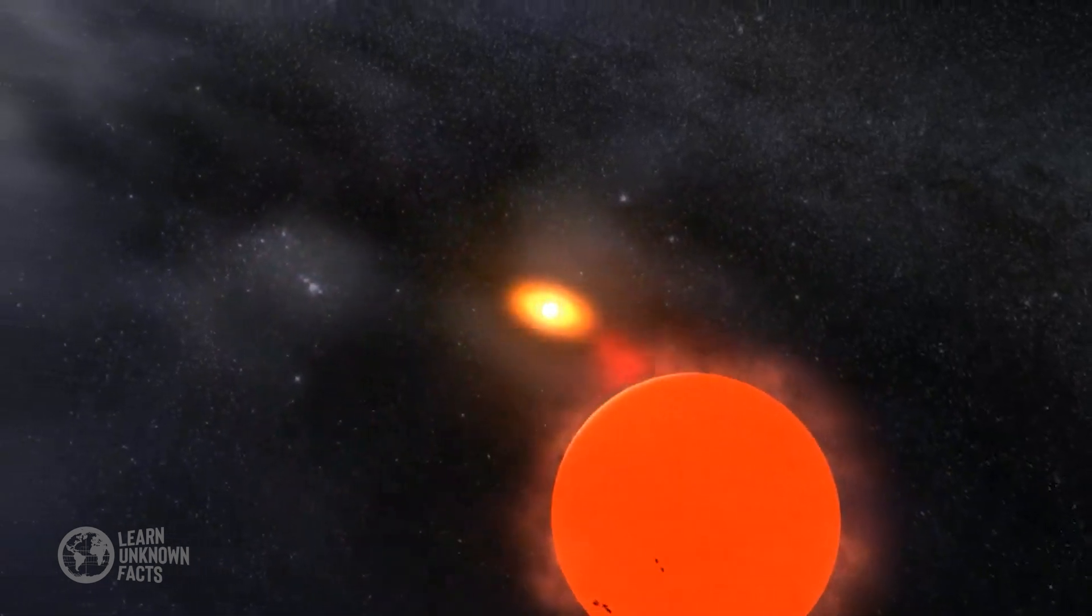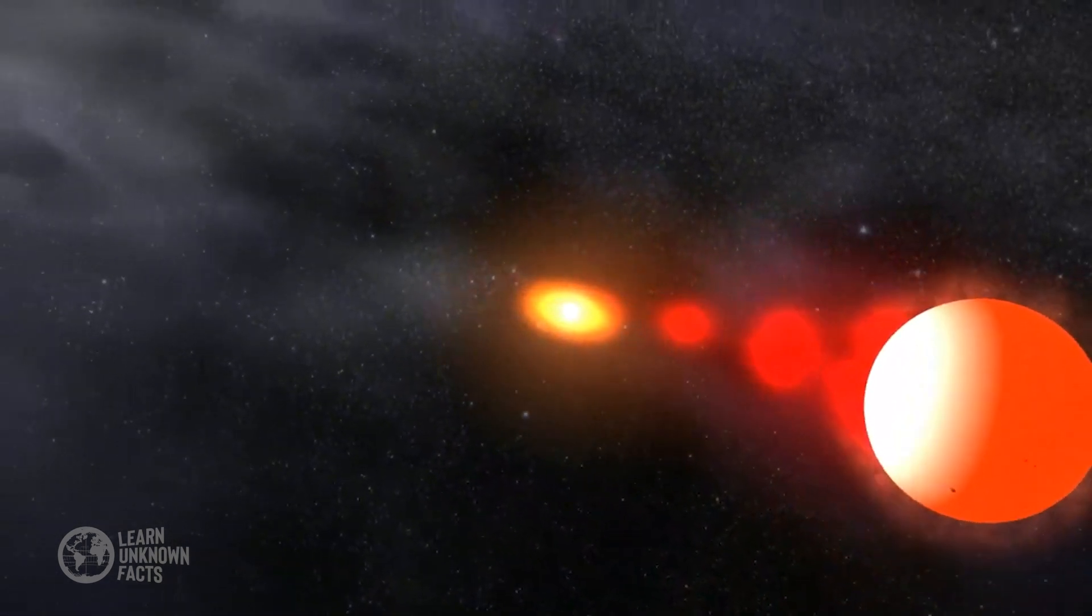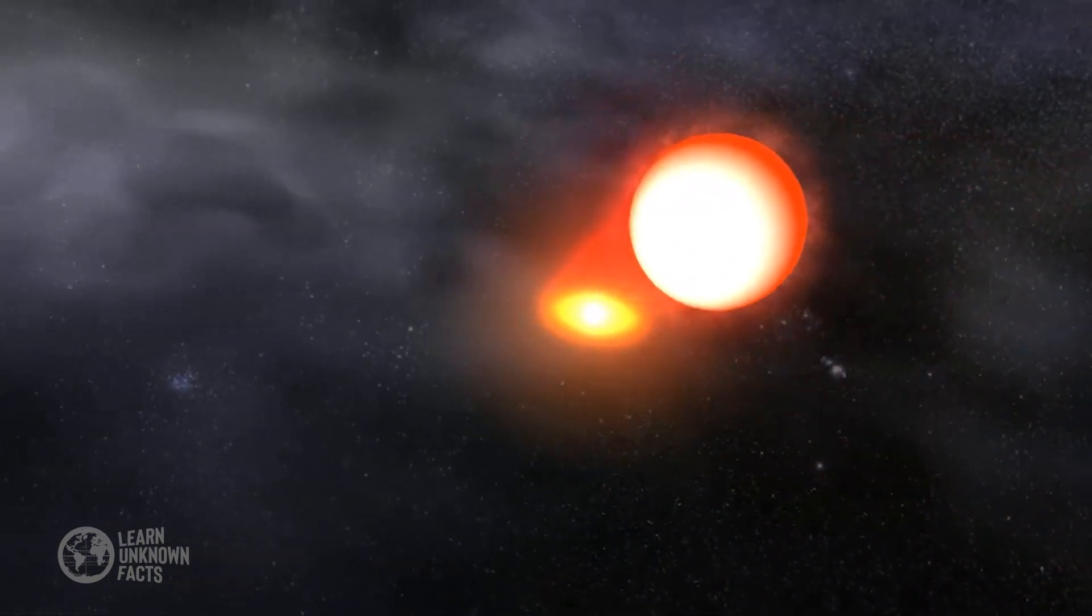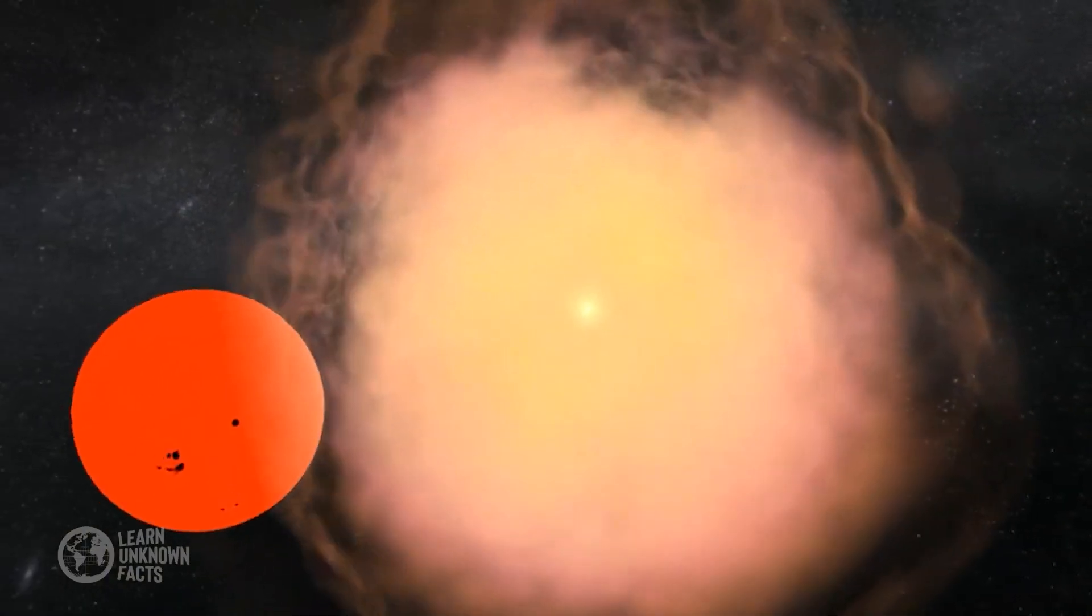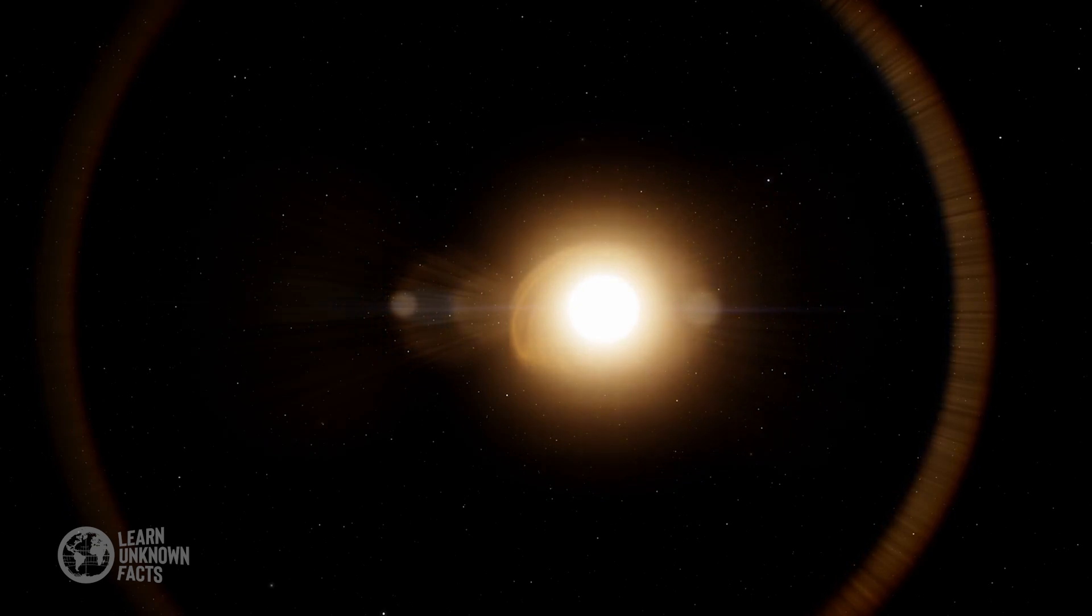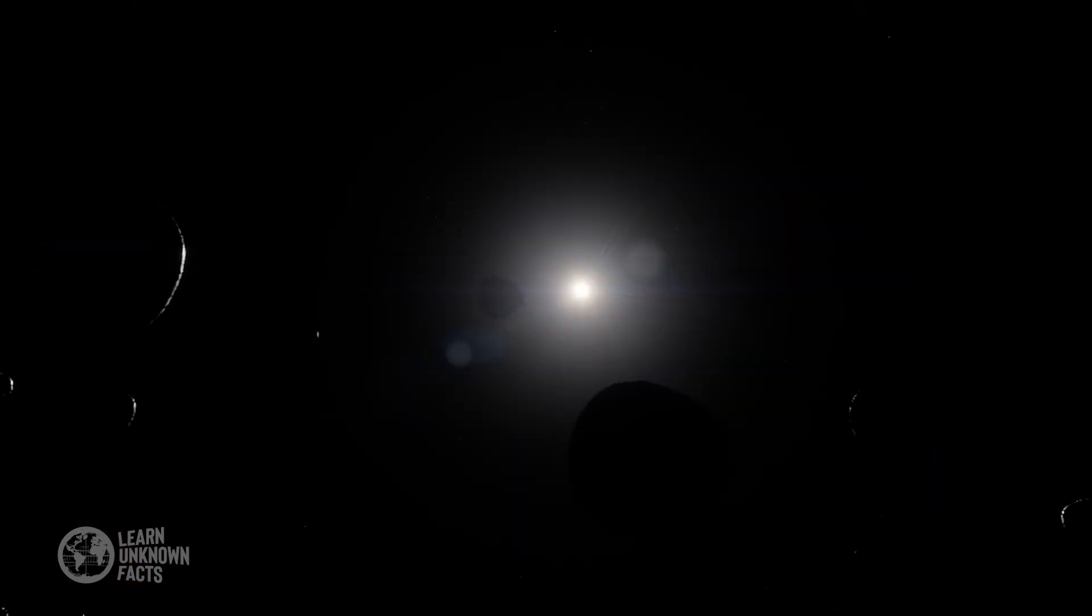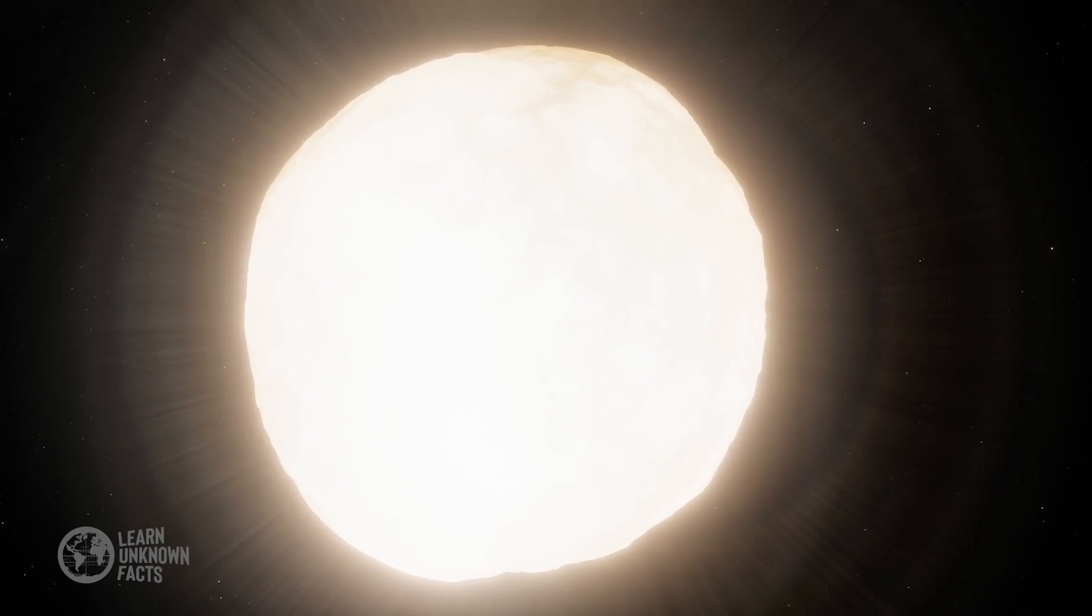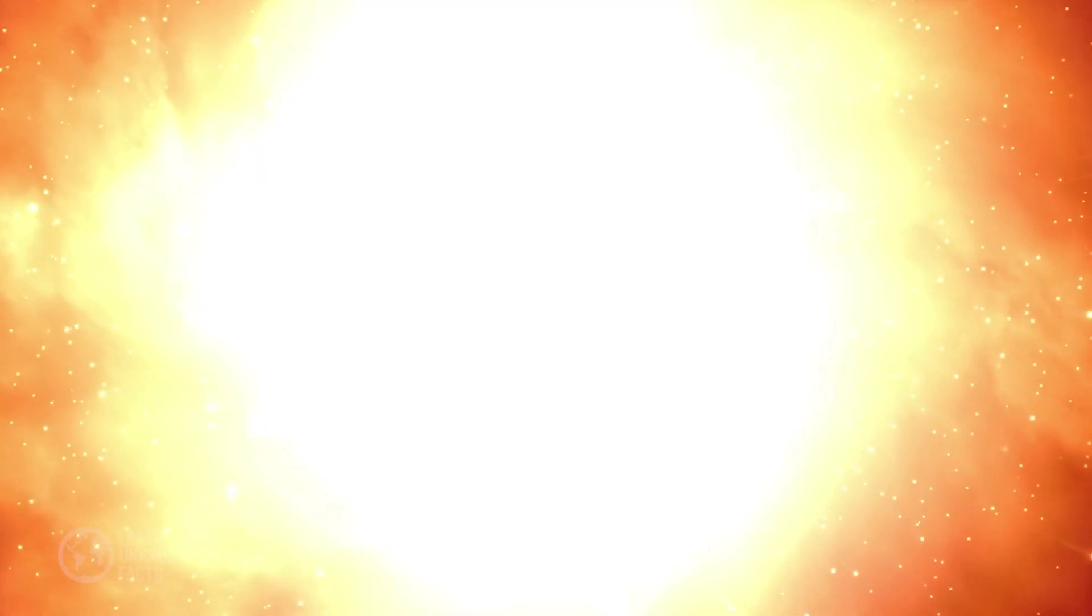Type 1 supernovas occur in binary star systems, where a white dwarf star accumulates matter from a companion star. This process is known as accretion. As the white dwarf's mass approaches the Chandrasekhar limit of about 1.4 solar masses, it undergoes a runaway nuclear fusion reaction, leading to a catastrophic explosion.